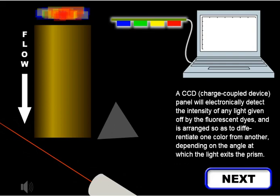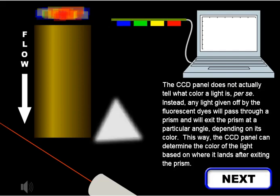A CCD, or charge-coupled device panel, will electronically detect the intensity of any light given off by the fluorescent dyes and is arranged so as to differentiate one color from another depending on the angle at which the light exits the prism. The CCD panel does not actually tell what color a light is, per se. Instead, any light given off by the fluorescent dyes will pass through a prism and will exit the prism at a particular angle, depending on its color. This way, the CCD panel can determine the color of the light based on where it lands after exiting the prism.